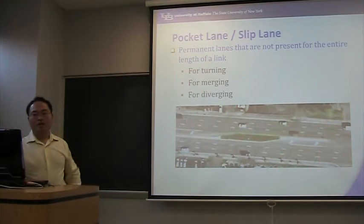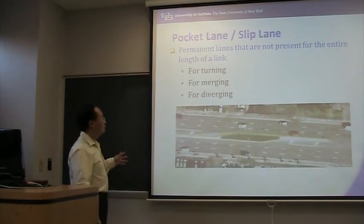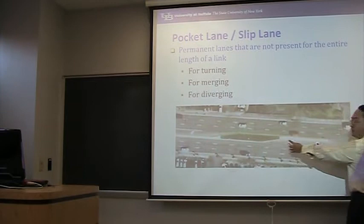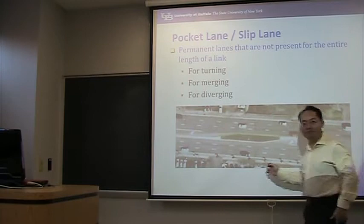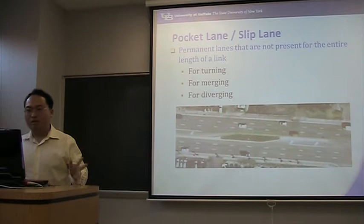Here is a demonstration of pocket lanes. Pocket lanes are permanent lanes that are not present for the entire length of a link. For example, this is a link, and only in this part can I find an actual lane for left-turn movement — this is called a pocket lane, or slip lane. These are some hard-to-understand concepts I wanted to introduce first.